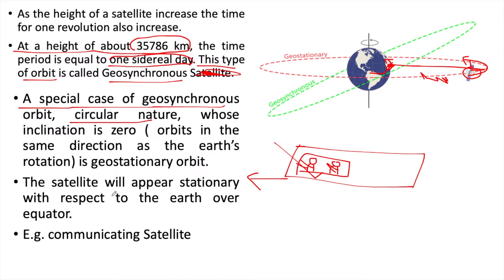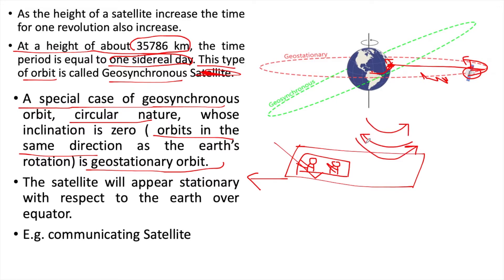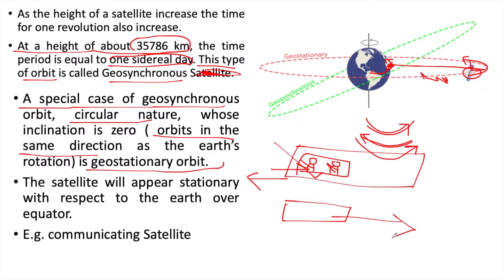The satellite will appear stationary with respect to the Earth over the equator. This type of satellite is called a geostationary satellite. However, one more condition is required: the orbit must be in the same direction as the Earth's rotation. If the satellite moves in the opposite direction, just like two trains moving in opposite directions even at the same speed appear to move faster relative to each other, it will not appear stationary. Communication satellites are examples of geostationary satellites.